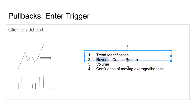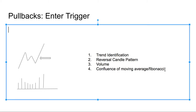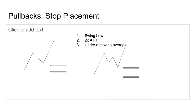You want to see these reversal candle patterns form at a confluence of moving averages and Fibonacci levels — they don't have to be exact, since market structure isn't perfectly precise, but find the pattern within it. As long as you find a reversal candle pattern along with the trigger of volume, confluence of moving averages, and Fibonacci levels, that would be your entry trigger.